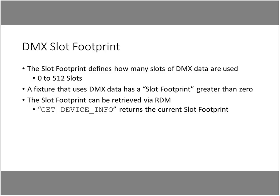One thing you'll hear us talking about a lot today is the DMX slot footprint. The slot footprint in DMX defines how many slots of DMX data are used. For an RDM responder it can be anywhere from zero to 512 slots. Any fixture that uses DMX has a slot footprint greater than zero. The slot footprint for that fixture can be retrieved via RDM, specifically via the GET Device Info. This is important for features like auto-patch, since the console needs to know how many slots of DMX are needed to complete the patch.